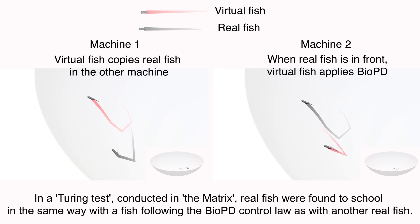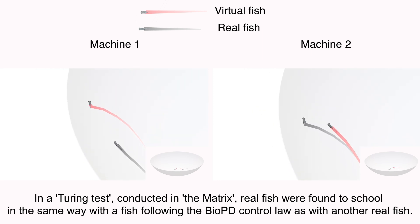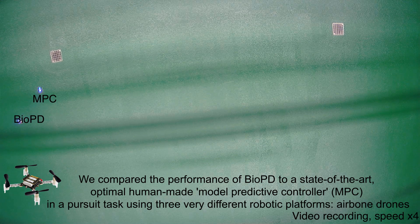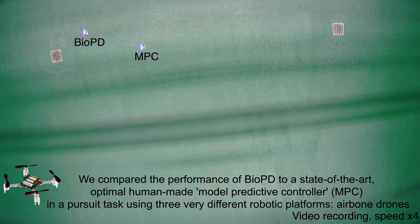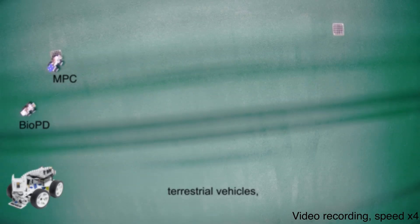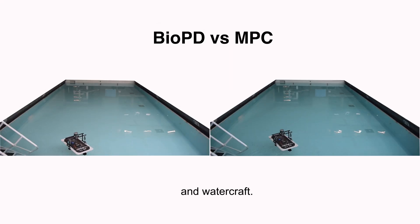In a Turing test conducted in The Matrix, real fish were found to school in the same way with a fish following the BioPD control law as with another real fish. We compared the performance of BioPD to a state-of-the-art, optimal human-made model predictive controller in a pursuit task using three very different robotic platforms — airborne drones, terrestrial vehicles, and watercraft.